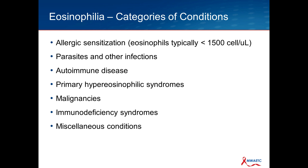The categories of conditions that can cause eosinophilia are: allergic sensitization, which is most common by far with eosinophils usually on the lower end of abnormal — typically less than 1500 per absolute count; parasitic and other infections; autoimmune diseases; primary hypereosinophilic syndromes; some malignancies; immunodeficiency syndromes often recognized in childhood; and some miscellaneous conditions that are generally pretty rare.